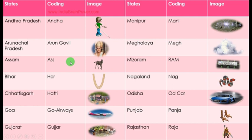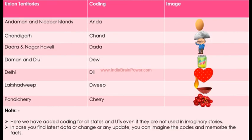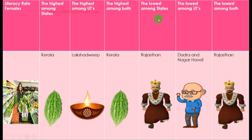The keywords are: Rajasthan = Raja (King), Kerala = Kerala, and for union territories: Dadra and Nagar Haveli = Dada (grandfather), Lakshdweep = Dweep (lamp). The highest literacy rate among states is Kerala. The highest among UTs is Lakshdweep. The highest overall is Kerala.